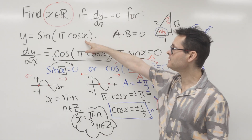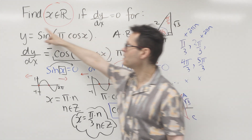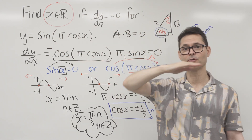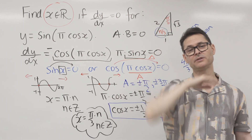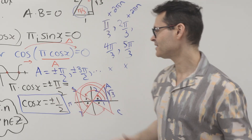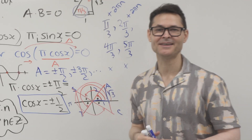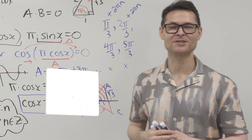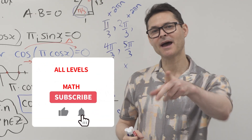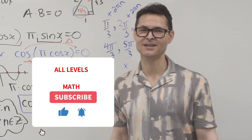Those are the set of angles that, when plugged in, make the derivative of this function equal to zero — in other words, giving horizontal tangents. If you liked this video, slap a like on it, don't forget to subscribe, and I'll see you back here for some more fun math videos.